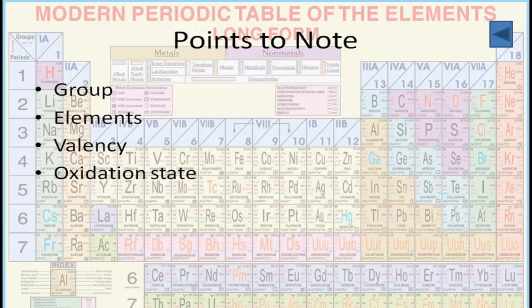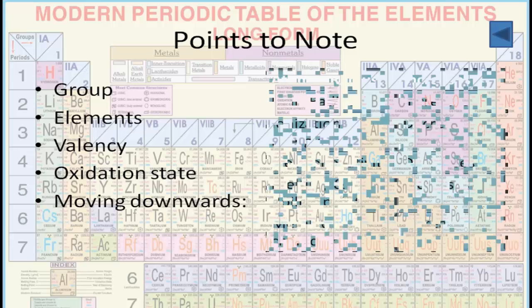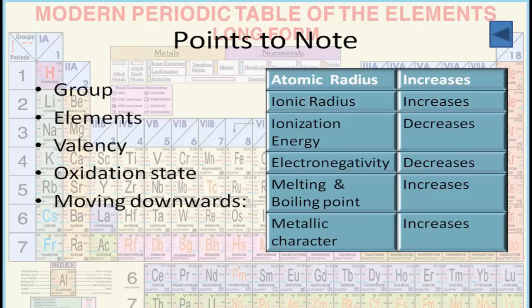And let's now understand the main thing. When we talk about the modern periodic table, we should know these variables. First is atomic radius, which increases down the group. That is, if we move from nitrogen to bismuth, then atomic radius goes on increasing.